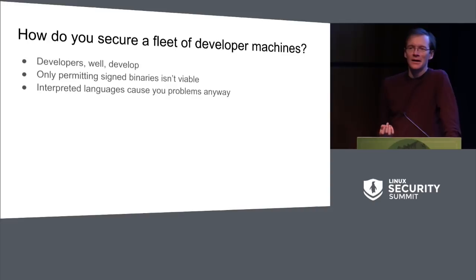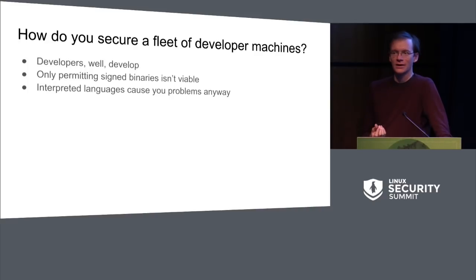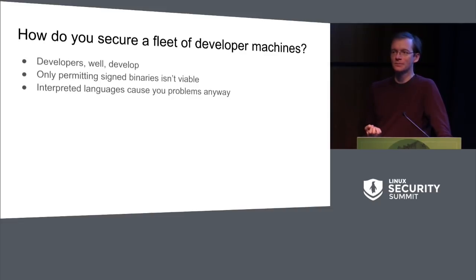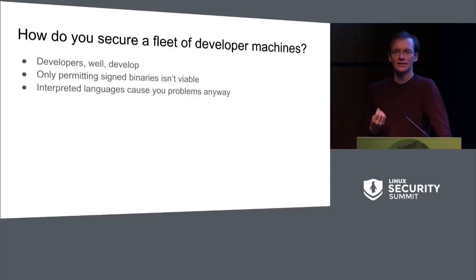We employ quite a lot of developers, and those developers largely end up using Linux systems at some point in their day-to-day work. We would like those Linux systems to have reasonably strong security guarantees. But somewhat inherent in the role of being a developer is the bit where you build some software and then try to run it. And if your security model is based around only allowing explicitly trusted binaries to execute, that's going to make it more difficult for developers to do their job.